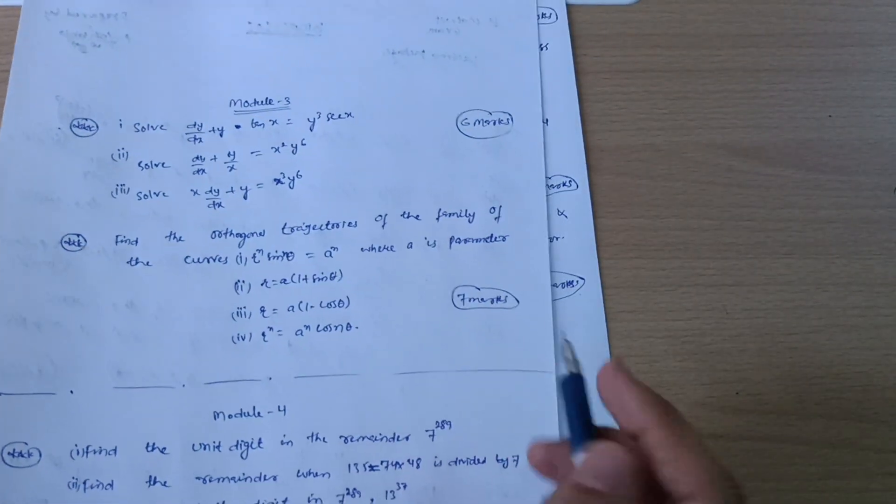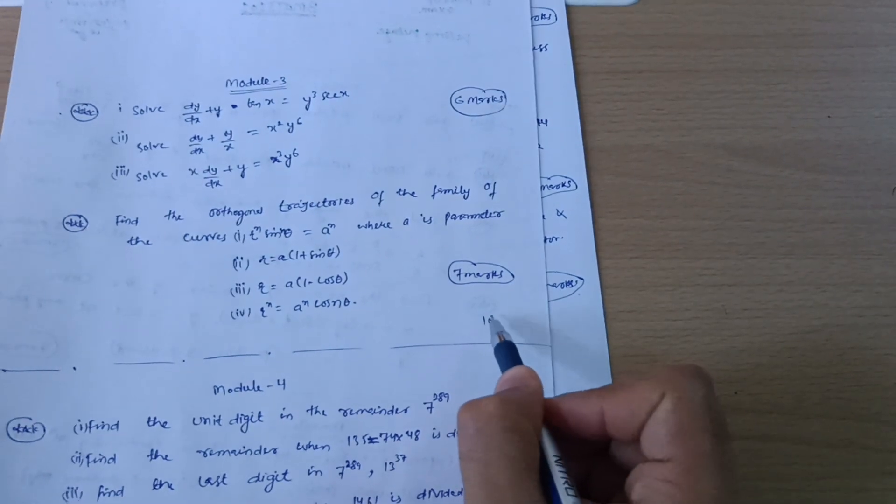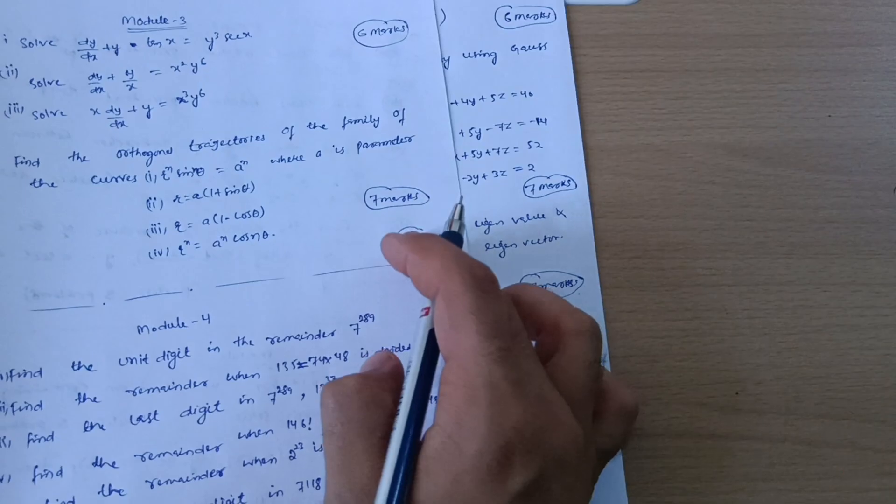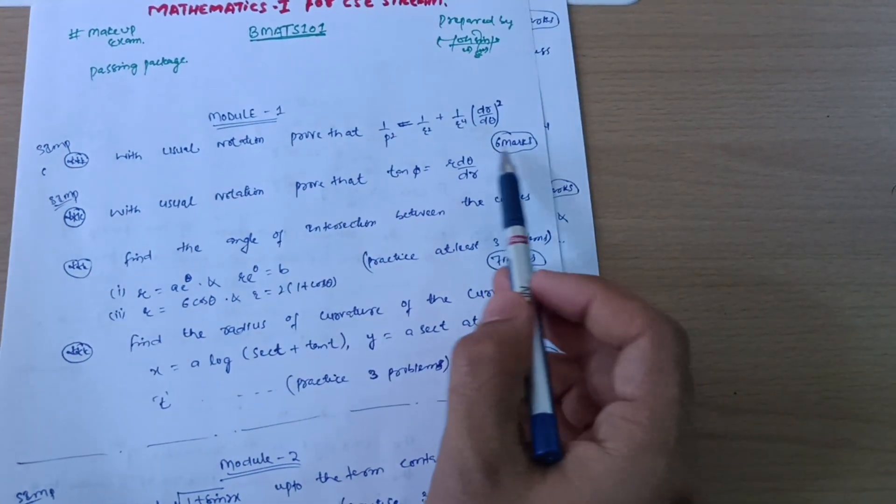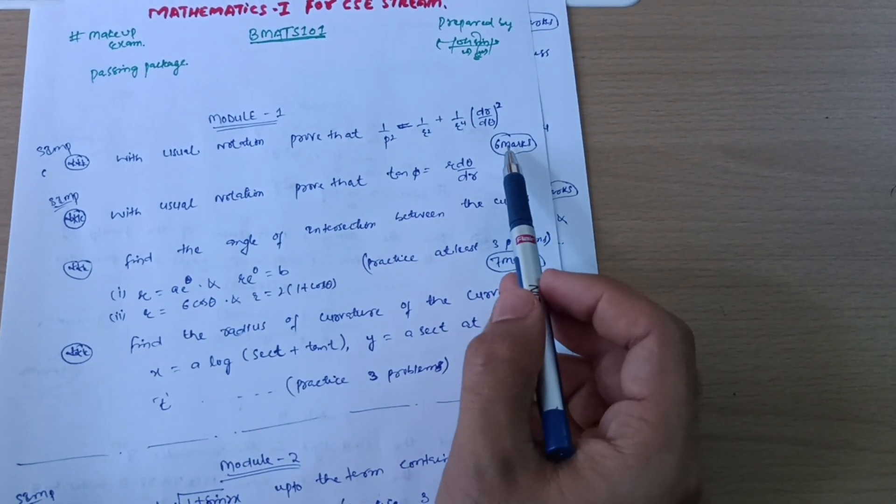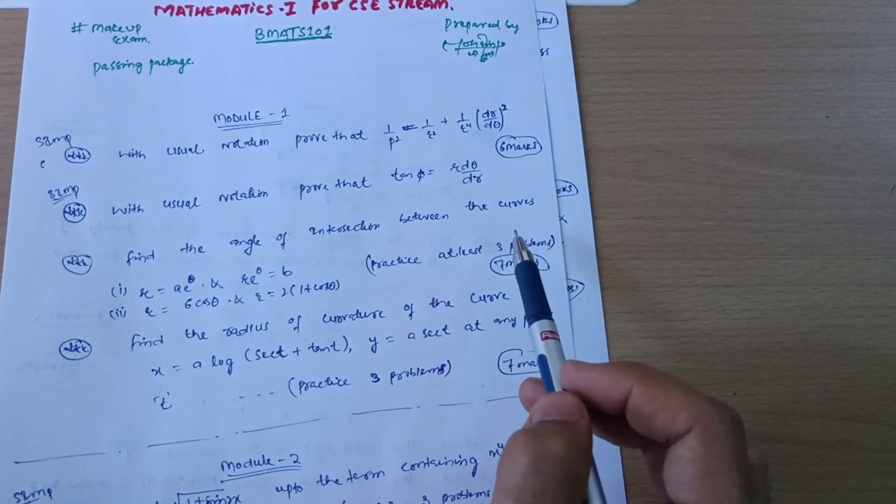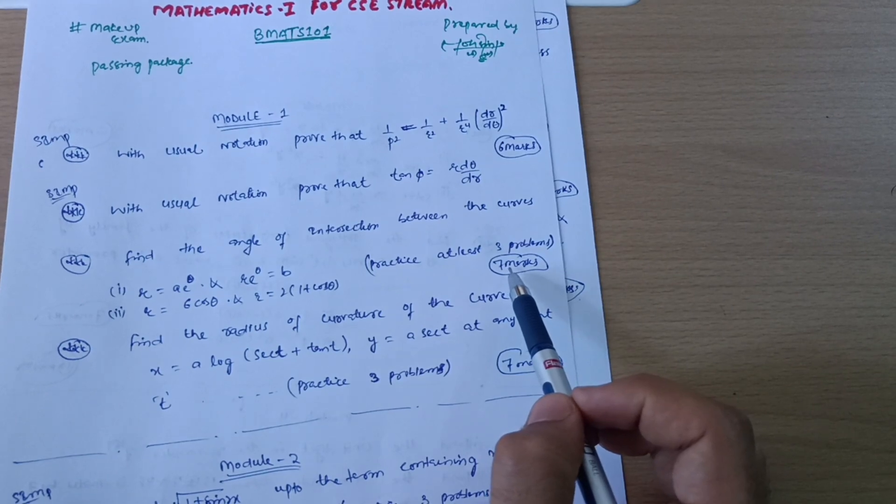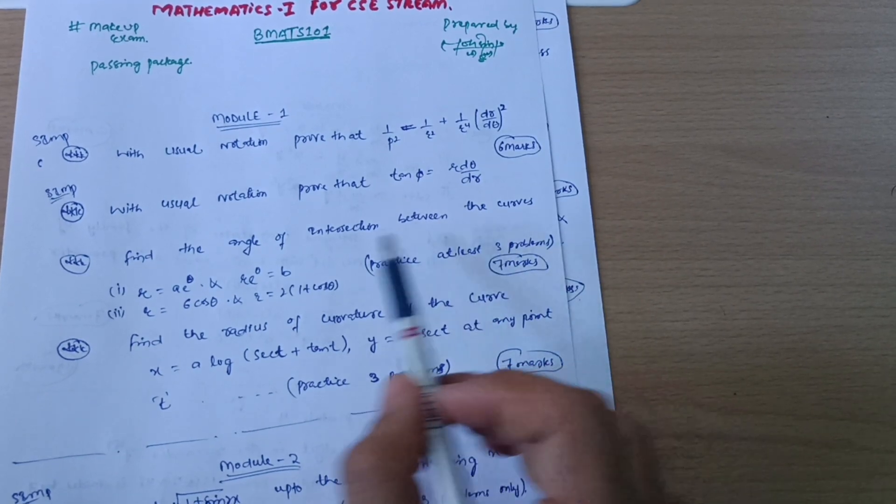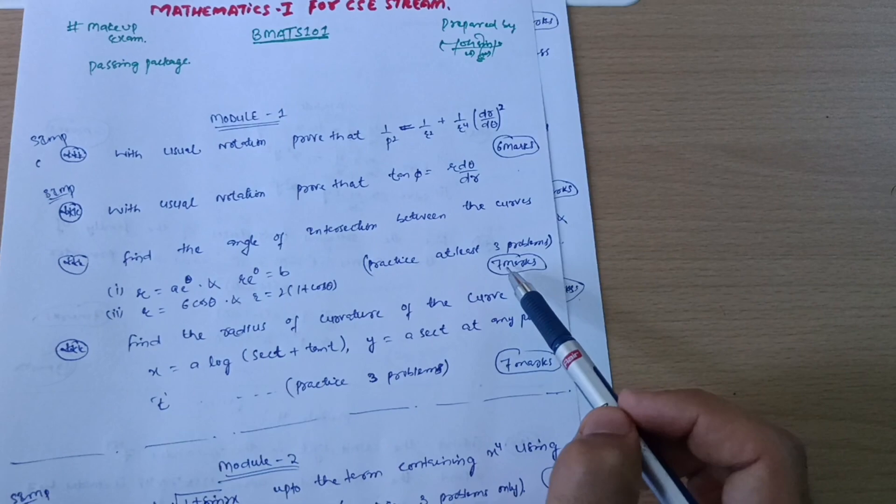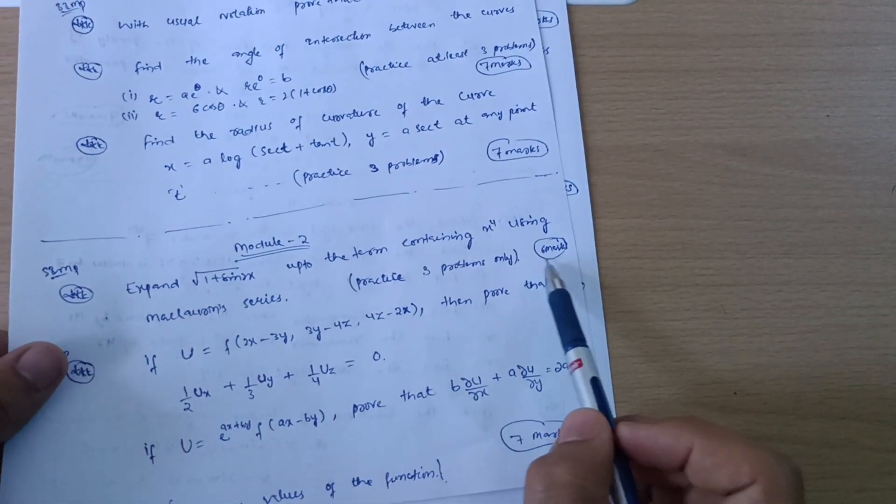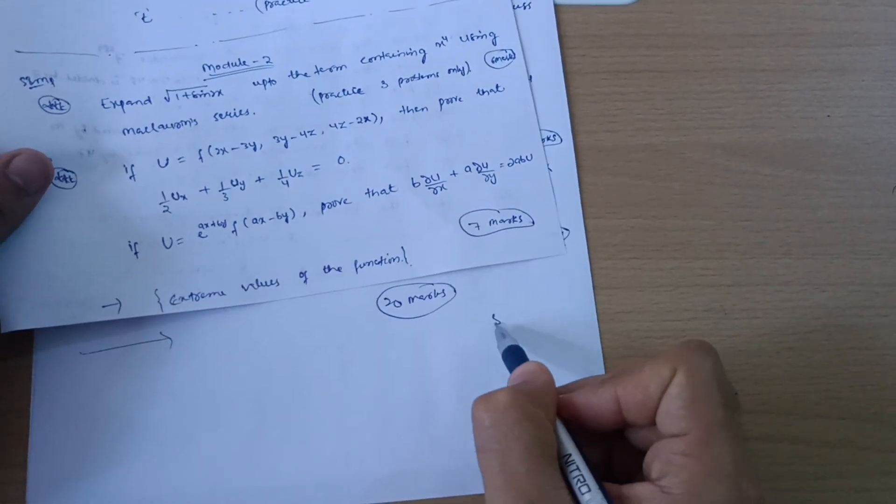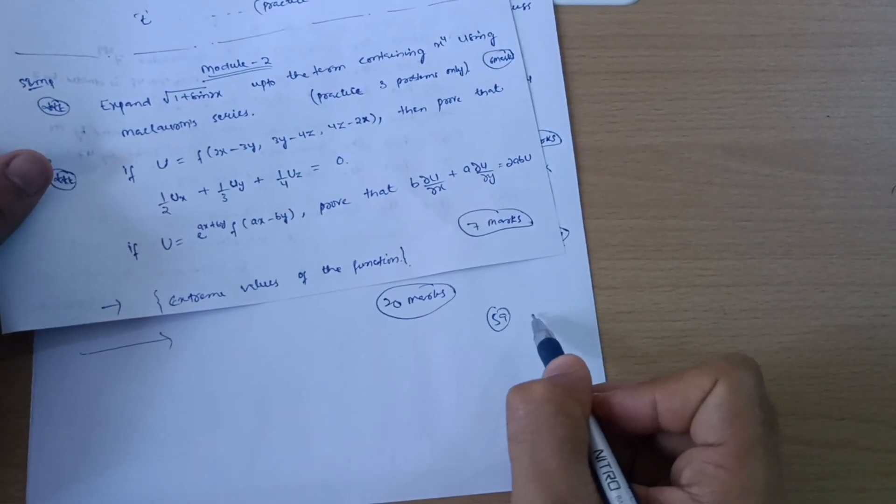And from module third you should get again I'm taking least case that is 10 marks. So this is your 30, 20 plus 10 is 30 plus 10 is 40, right? 40. And also these 6 are fixed, 40 plus 6 is 46. I will not take another marks if you are not convenient with the question, so 46 I'm taking. And also these seven marks if you are going through three or four problems from angle of intersection, 46 plus 7 that is 53. And from this I will take only 6 marks, so 53 plus 6 is 59 marks. So you are totally getting 59 out of 100.